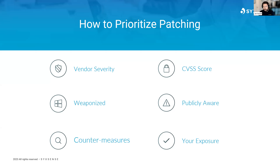Do bear in mind that vendor severity can clearly be a biased rating. Many third-party updates don't receive severities from their manufacturers, as it would obviously highlight that product in a negative light. To combat this, we instead prioritize the industry severity more, such as the CVSS score — the Common Vulnerability Scoring System — calculated by an independent organization such as NIST. This score ranges from 0 to 10, with 10 being the most severe and critical, and the higher the rating typically entails a higher possibility of exploitation.